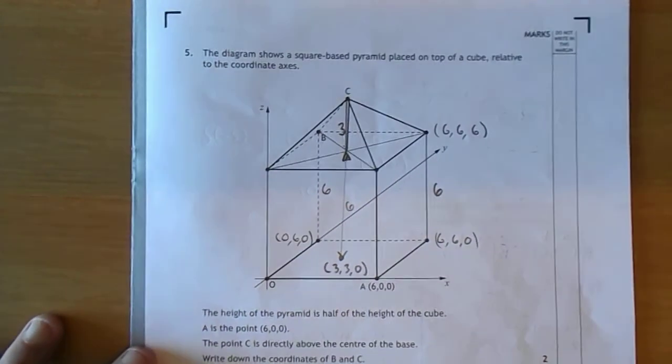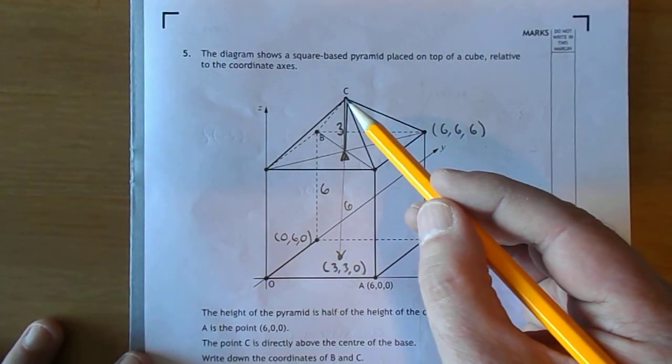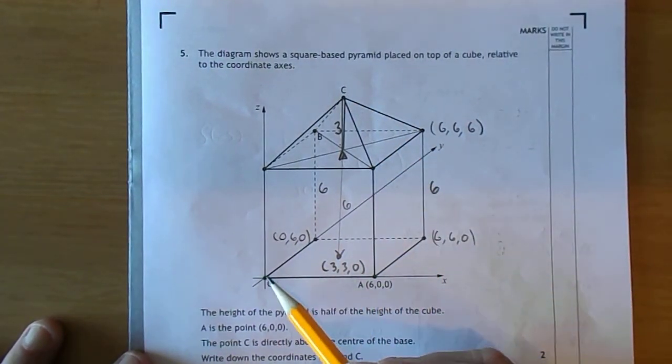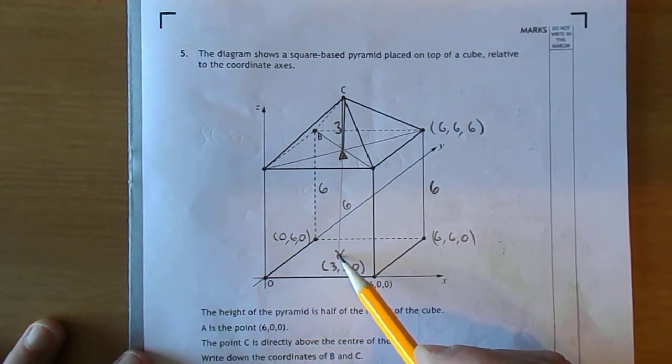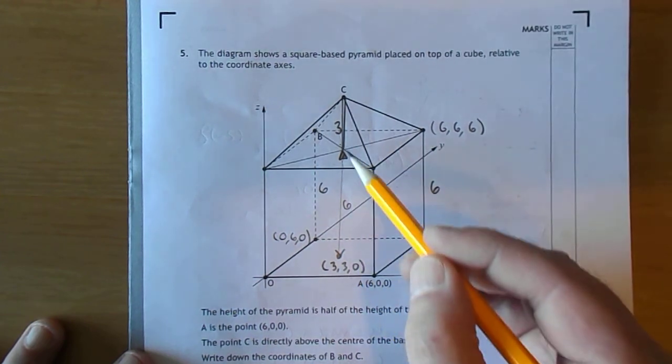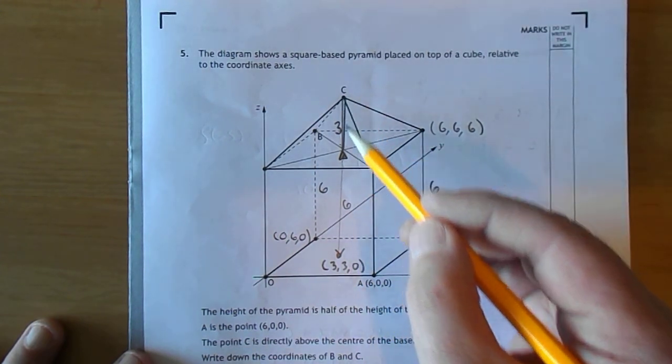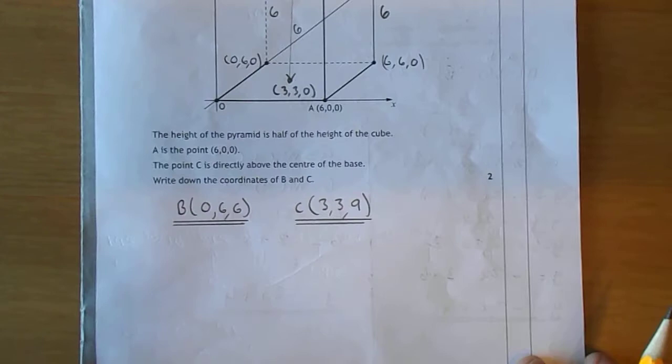And where is C? Of course there it is up there. How do you get from the origin to C? You go halfway along. So that's 3. Halfway back gets you to the centre. And remember, 6 and 3, it's 9 up. So C is the point 3, 3, 9.